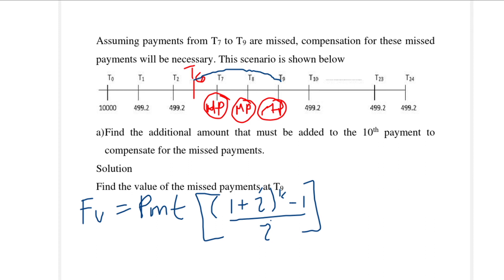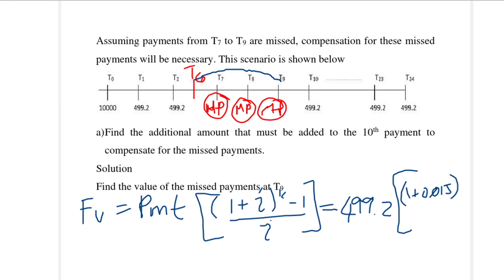Using the future value of an annuity formula, the payment is 499.20 rands. The interest rate was given as 18% per annum compounded monthly, so that means it's 0.5% per month. From T6 to T9 there are three payments, so K equals 3.